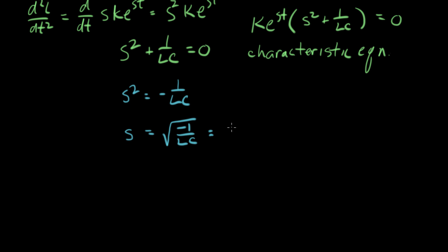I can write this as square root of minus one times square root of one over LC, and that gives me two answers. I'm going to call the first answer s one, and that's going to be equal to j, which is the imaginary number, that's the square root of minus one for electrical engineers, times square root of one over LC. And the other s two is the negative of that, minus j.